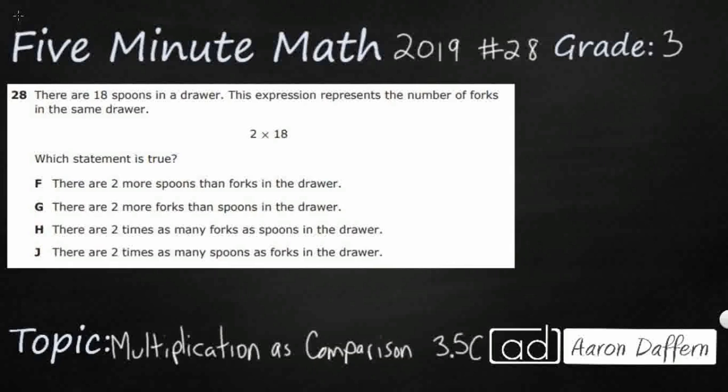So this looks like a fairly simple problem. We only have a 2 times 18 down here, but if you notice our answer selections F, G, H, and J, they are all going to be sentences because we, in this standard, have to describe multiplication as comparison.